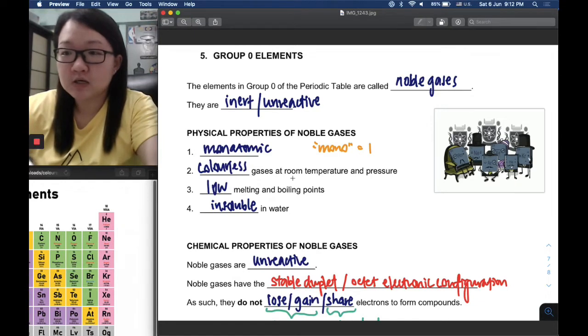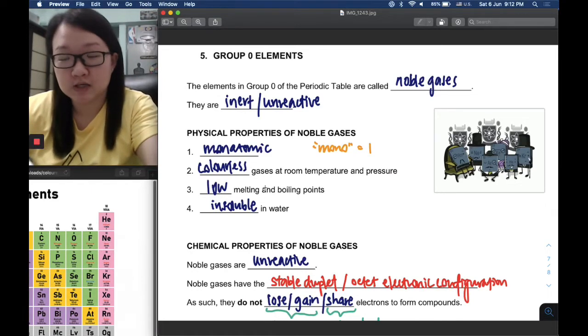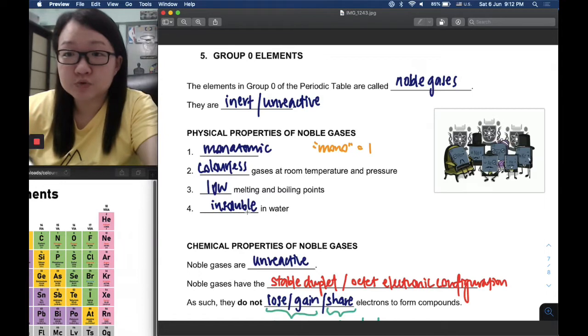They are colorless gases at room temperature and pressure because of their low melting and boiling points. That's why they can be gases at 25 degrees Celsius. Fourth, noble gases are insoluble in water.